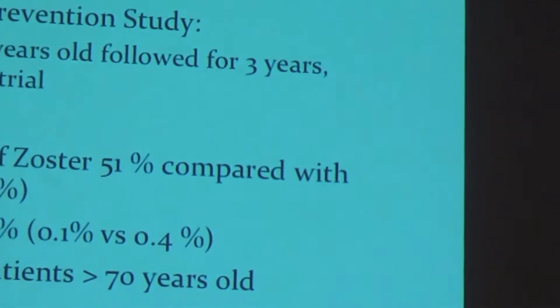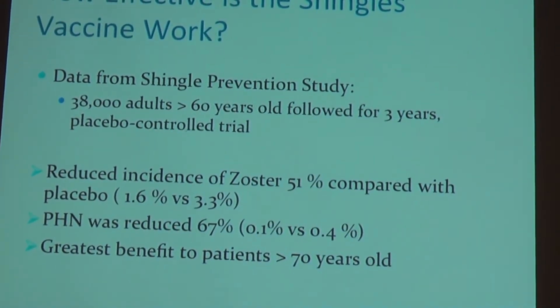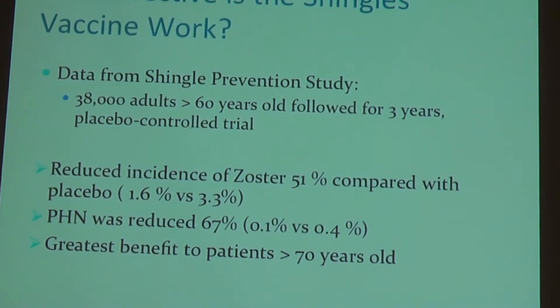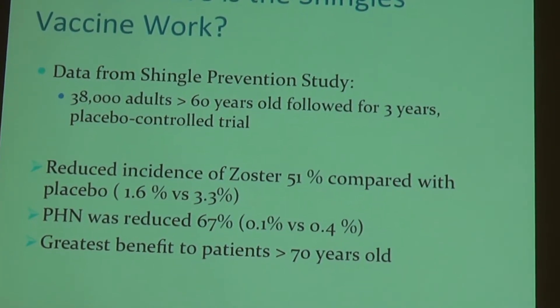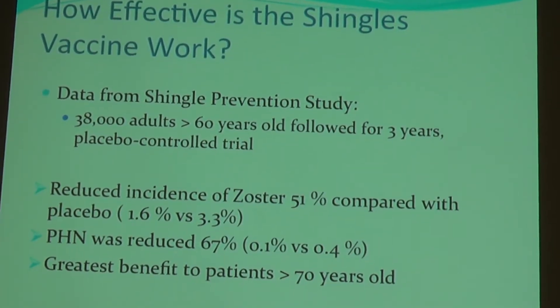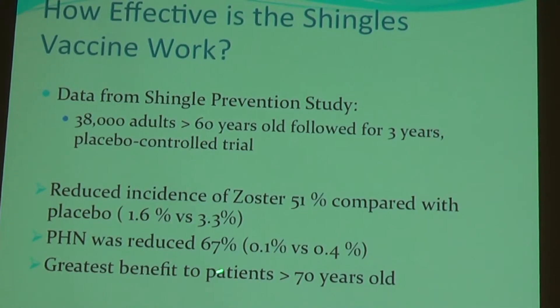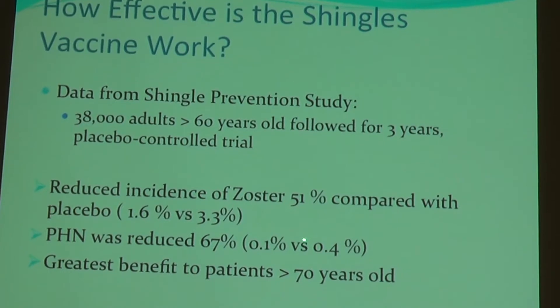How effective is the shingles vaccine? We have data from the Shingles Prevention Study, which involved 38,000 adults over the age of 60 followed for three years. It was a placebo-controlled trial — half received the shingles vaccine and half did not. They found that the incidence of zoster was reduced by 51% compared with patients who did not get the vaccine. In patients who did develop zoster, the incidence of post-herpetic neuralgia was reduced by two-thirds. The greatest benefit was seen in patients over 70 years old.